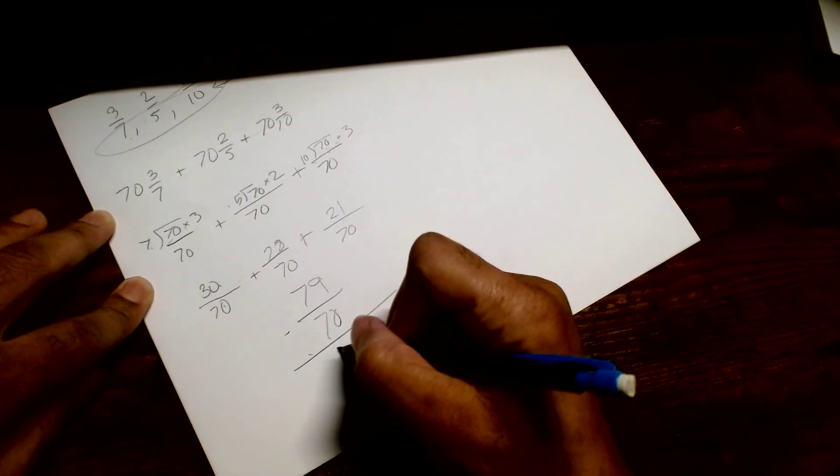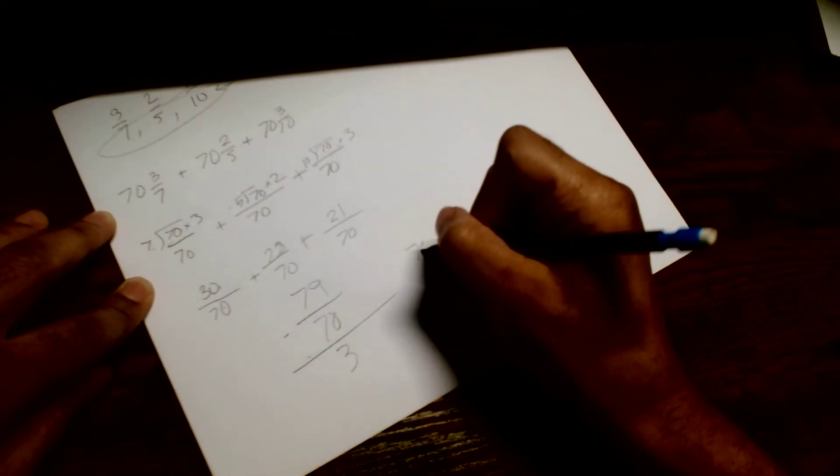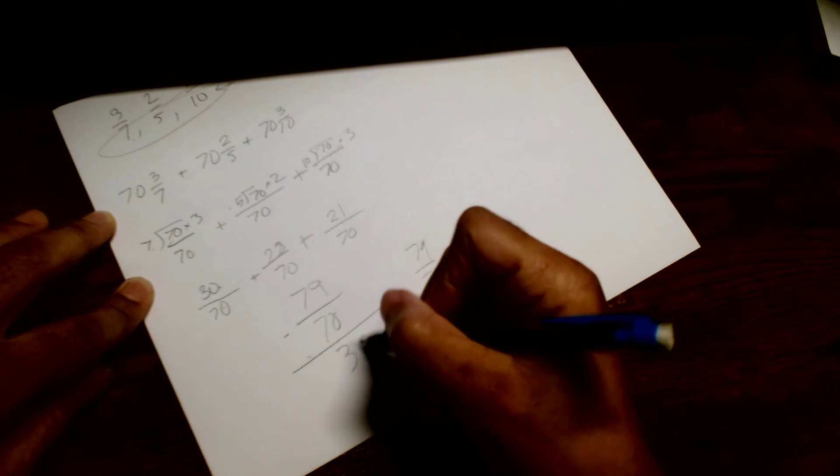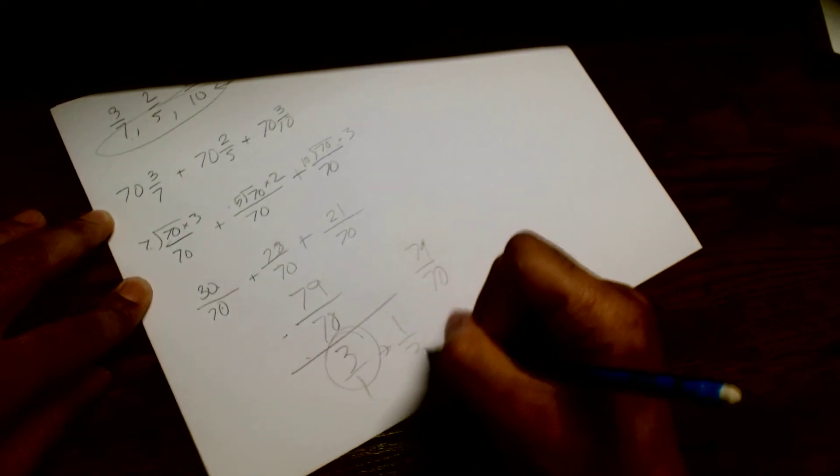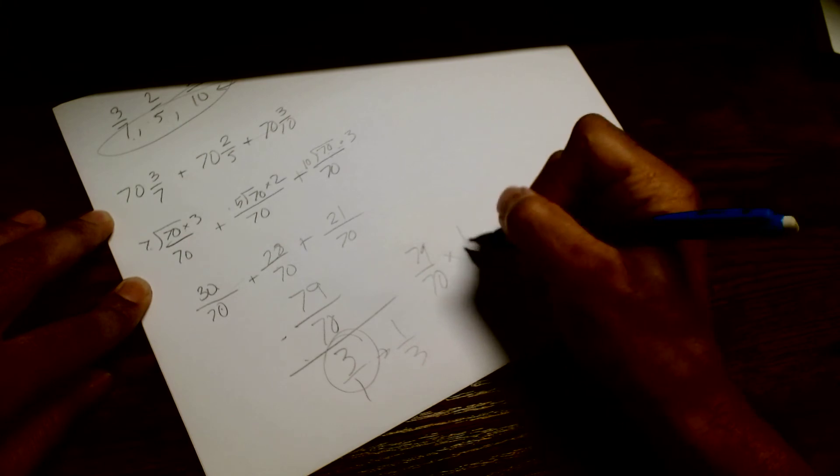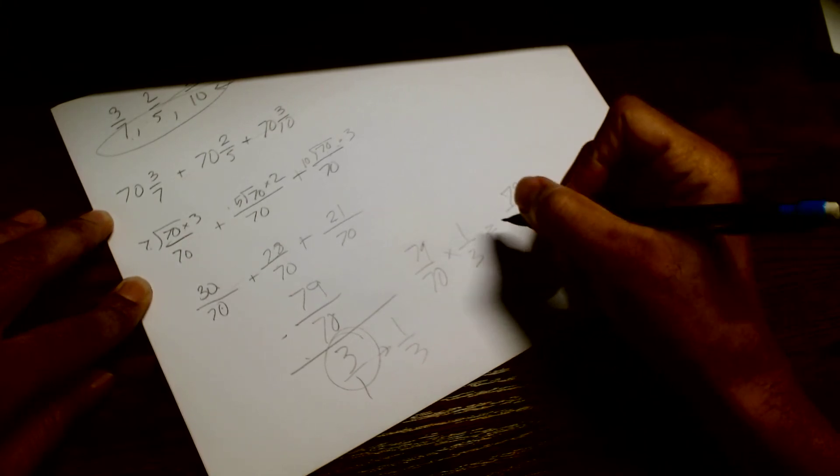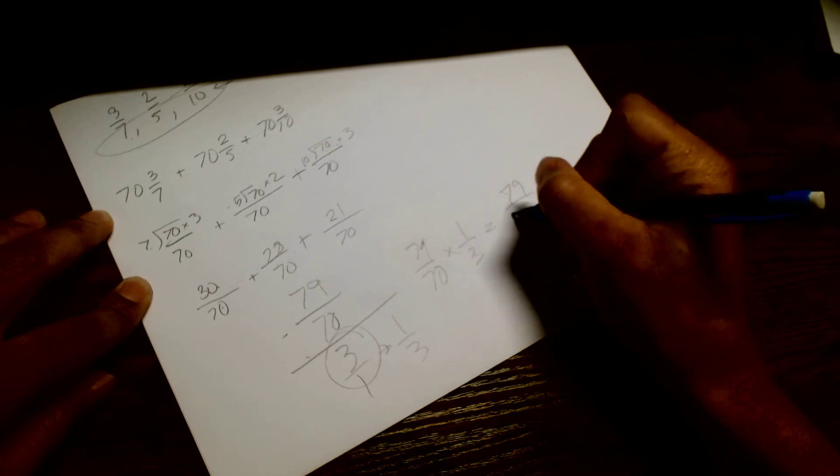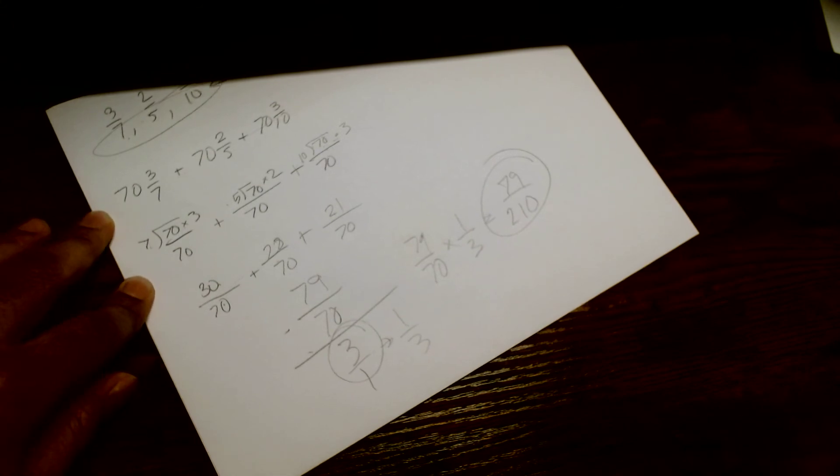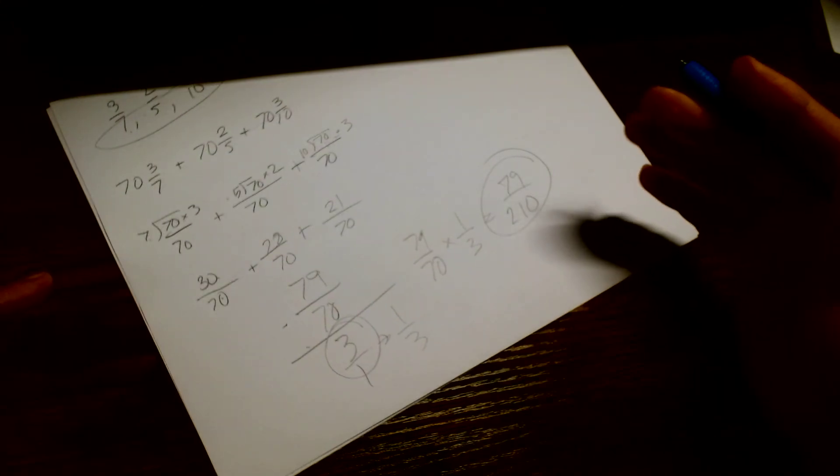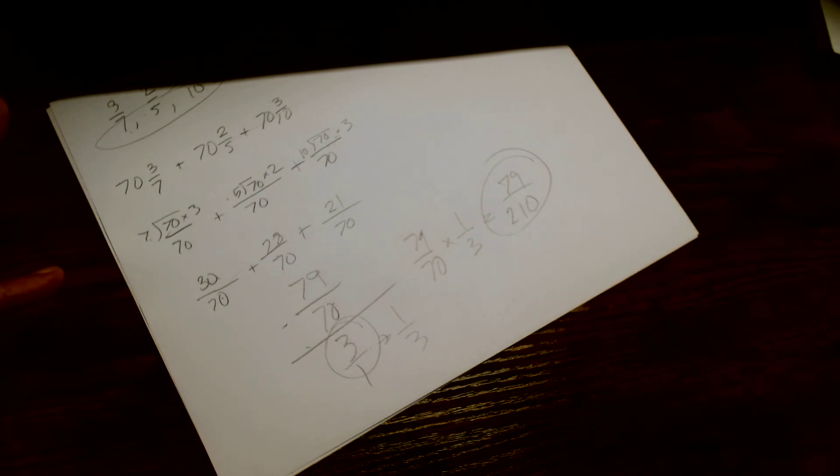BAM. So now we have 79 over 70 and we gotta divide that by the reciprocal, that 3. So 3 over 1 reciprocal is 1 over 3. Times 1 over 3. So that's gonna give us 79 over 210. That's the final answer fool. Savage Scientist Ed. Never know when you have to use this crap. Governor of the state of swampland. Till I make my next video, peace out.